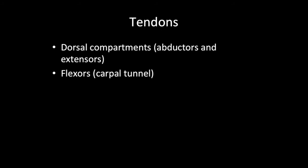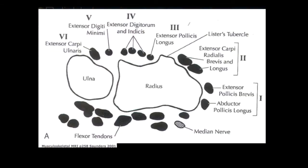Dorsally, we have the dorsal compartments that contain the thumb abductors and extensors, as well as the extensors of the fingers. Along the volar aspect, we have our flexor tendons, which are mostly contained within the carpal tunnel. In this useful diagram from Musculoskeletal MRI, published by Saunders in 2001, we can nicely see the six dorsal compartments and their associated tendons.